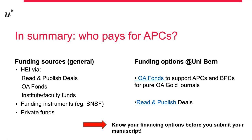Let me quickly summarize the funding possibilities. There are the funding instruments of your institution — in our case, the University of Bern Open Access Publishing Fund and the Read and Publish Agreements. If your APCs are not covered by one of these two, maybe your institute or faculty have funds to cover your APCs. Then there are other funding instruments, for example the SNSF, which funds your resulting publication as long as it is published open access. To avoid paying APCs out of your personal funds, always check your financing options before you submit your manuscript to a journal.